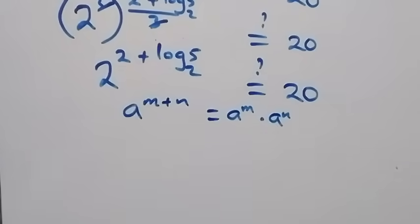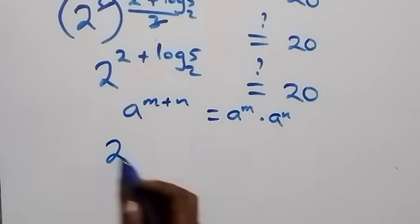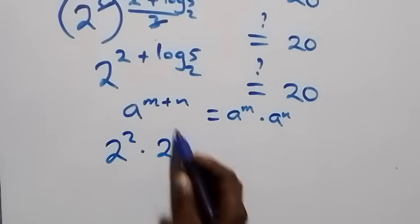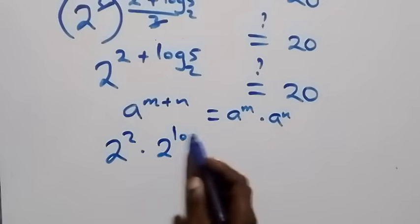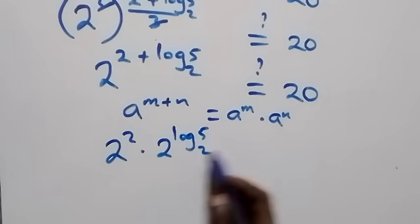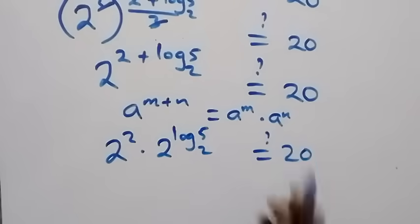So 2 squared is 4, times 2 raised to power log₂5. This follows from the rule where b raised to power log base b of a equals a, so 2 raised to power log₂5 equals 5. Thus we have 4 times 5 equals 20.